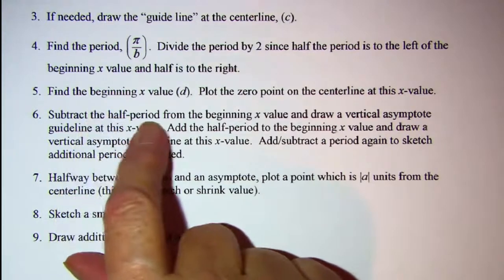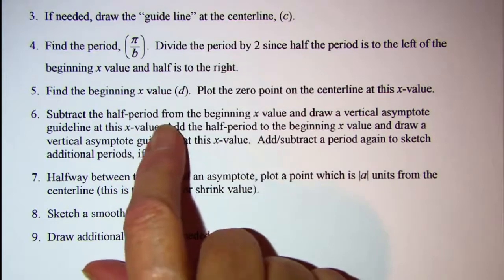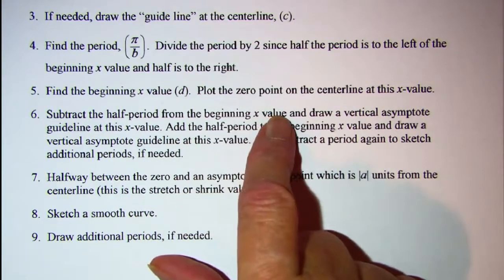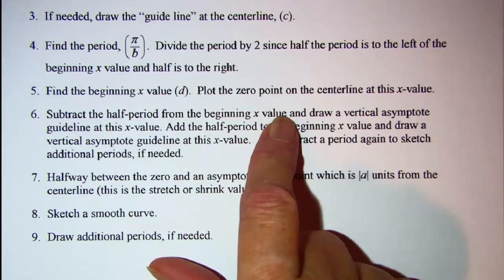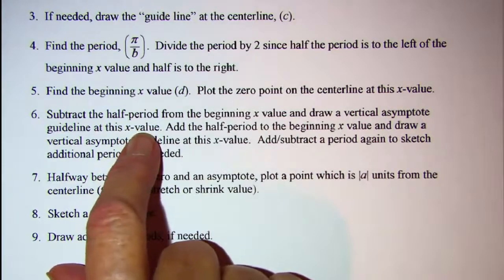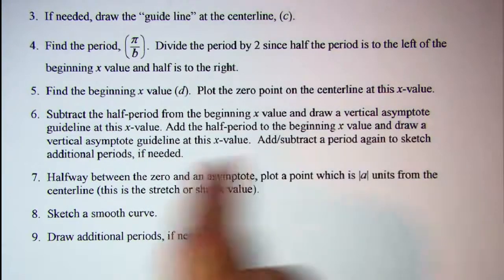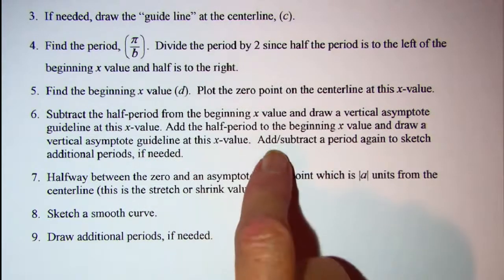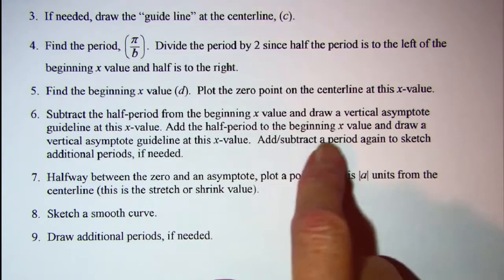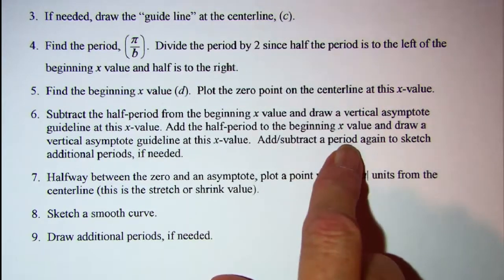Then subtract the half period from your beginning x value to get where our first vertical asymptote is drawn, and then add the half period to the beginning x value to get another vertical asymptote. And then add an entire period, not a half period. Then add an entire period or subtract an entire period if you need to sketch additional periods.